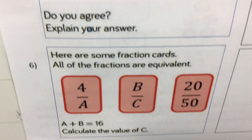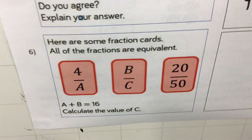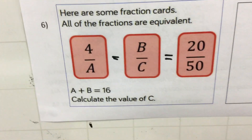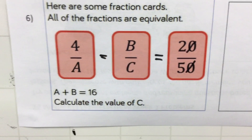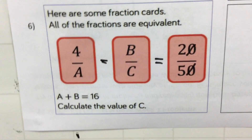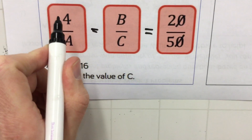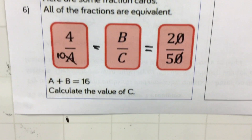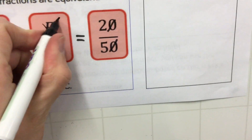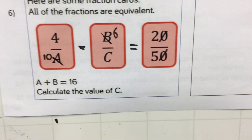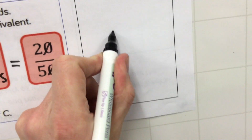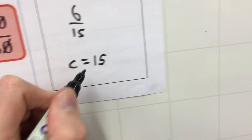There are some fraction cards where all fractions are equivalent: four over A equals B over C, equals 20 fiftieths. First, note that 20 fiftieths is equivalent to two fifths — divide top and bottom by ten. To go from two to four we multiply by two, so A must be ten. If A plus B equals sixteen and A is ten, B must be six. To go from two to six we multiply by three, so five times three gives C equals fifteen. Six fifteenths is the answer.